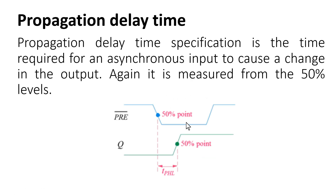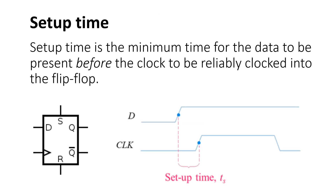There is another propagation delay time associated with every flip-flop. As you know, there are two asynchronous inputs — clear and preset — whose impact on the output does not depend upon the clock signal. This propagation delay is the time required for an asynchronous input to cause a change in the output. For example, for the preset signal, it is measured from the 50% point of preset until Q transitions to the 50% level.